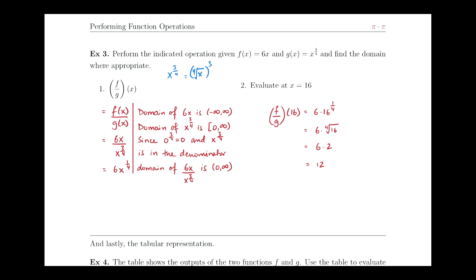So the domain of 6x over x to the 3 fourth would be the intersection of these two sets, which will be 0 to infinity inclusive. But we have to throw 0 away, because if I plug 0 into the denominator here, I'm going to get a 0, which is undefined.